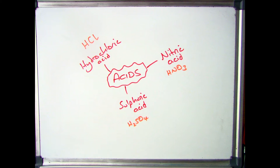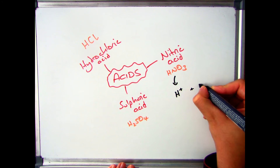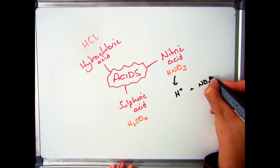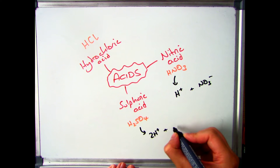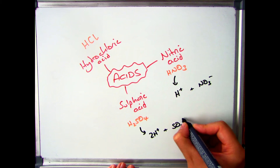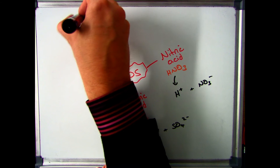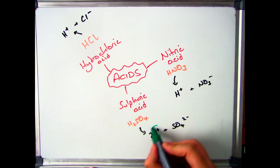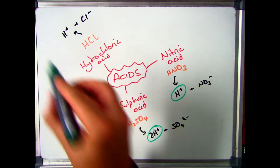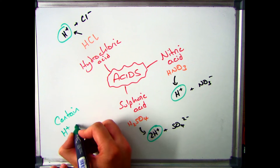For all three of these you can see that there's something that's the same. If we break them down into the ions, nitric acid is made of an H+ ion and an NO3- ion. Sulfuric acid is two H+ ions and one SO4 2- ion, and hydrochloric acid is made of an H+ ion and a Cl- ion. So all of these are made up of one ion that's the same: H+. The key thing to learn here is that all acids contain an H+ ion.